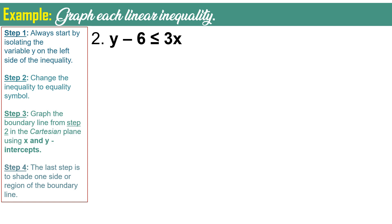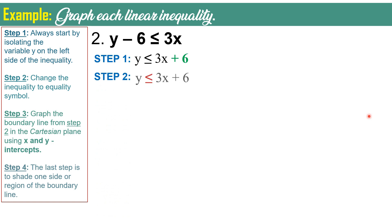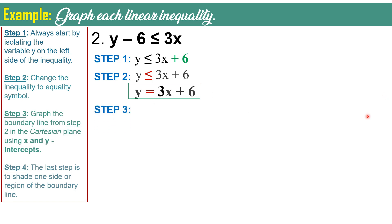Another example: y minus 6 less than or equal to 3x. Following step 1 — always isolate the variable y on the left side. As you can see, y is with another term, negative 6. Therefore, transpose negative 6 to the other side. Since it's negative, when you transpose it, it becomes positive. Now we have y less than or equal to 3x plus 6. Then proceed with step 2: change the inequality symbol to an equal sign. Now we have y equals 3x plus 6.